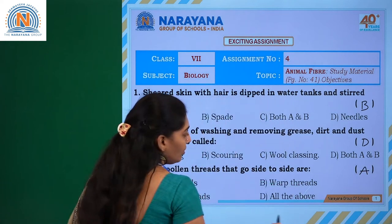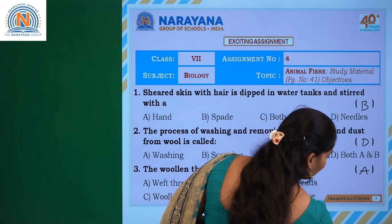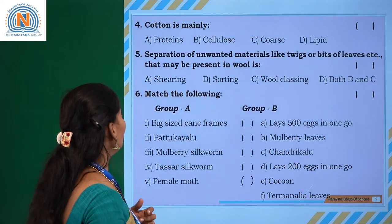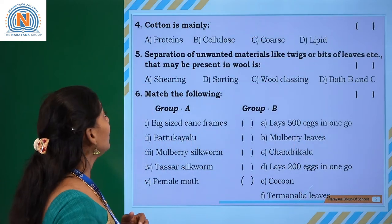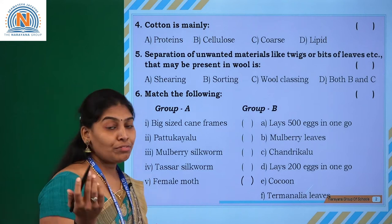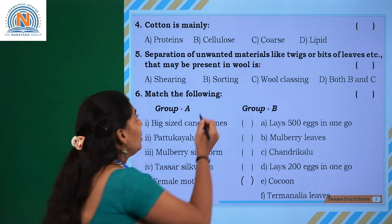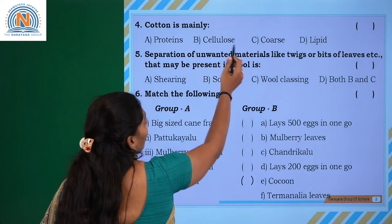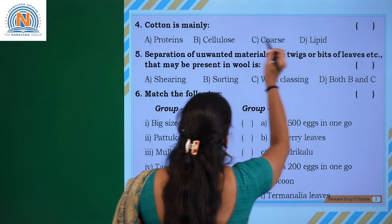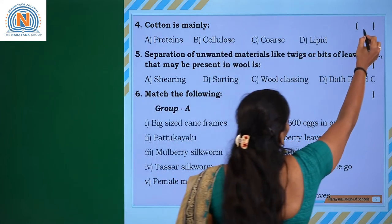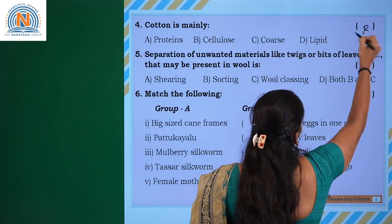The next question: cotton is mainly composed of - proteins, cellulose, coarse, or lipid. The answer is option B, cellulose.